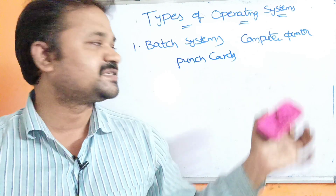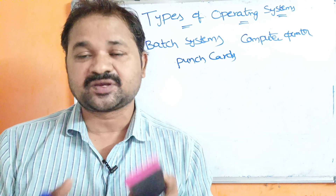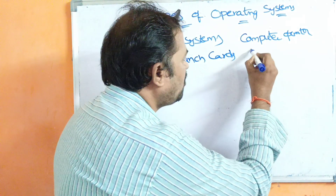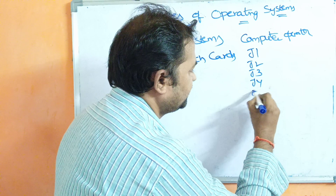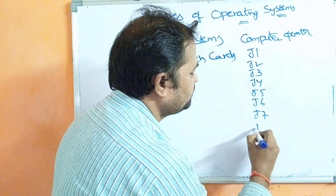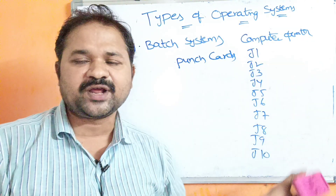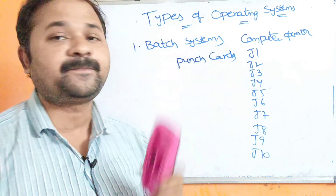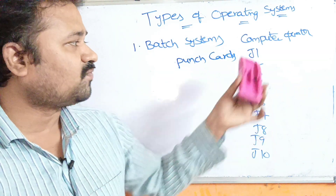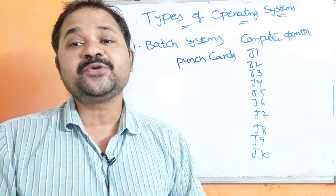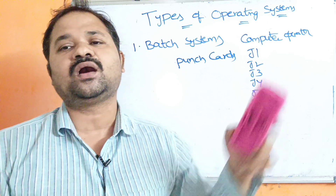Let us assume the user wants to execute 10 jobs or 10 programs. In the form of punch cards, all that information will be supplied to the computer operator. The computer operator will then group all these jobs into batches according to the requirement.